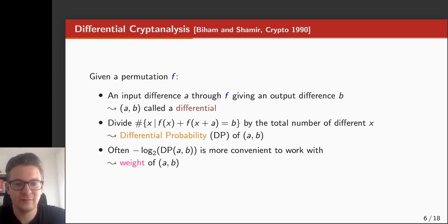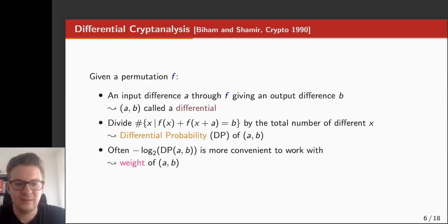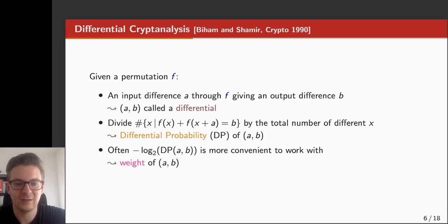Given a permutation f, we call a tuple (a, b), where a is an input difference that propagates to an output difference b through f, a differential. Assigned to a differential is its differential probability, also called the dp, defined as the number of x for which f(x) ⊕ f(x ⊕ a) = b, divided by the total. Because of the addition property of the logarithm, it is often more convenient to work with the minus log₂ of the dp, and this is called the weight of the differential (a, b).